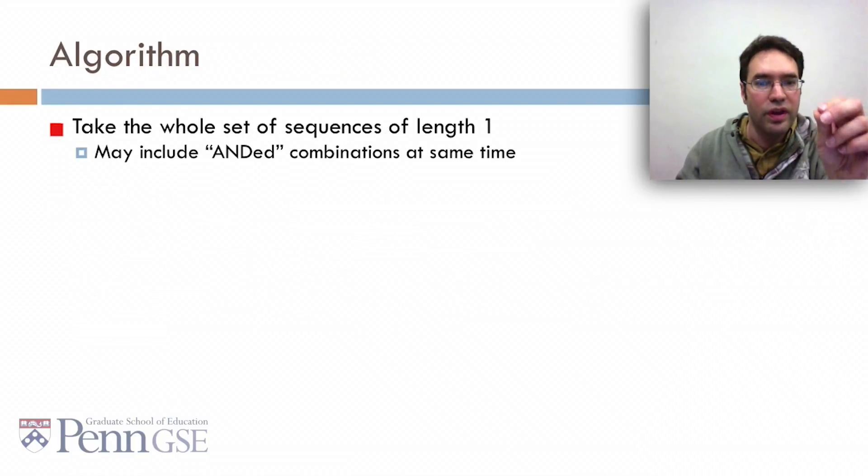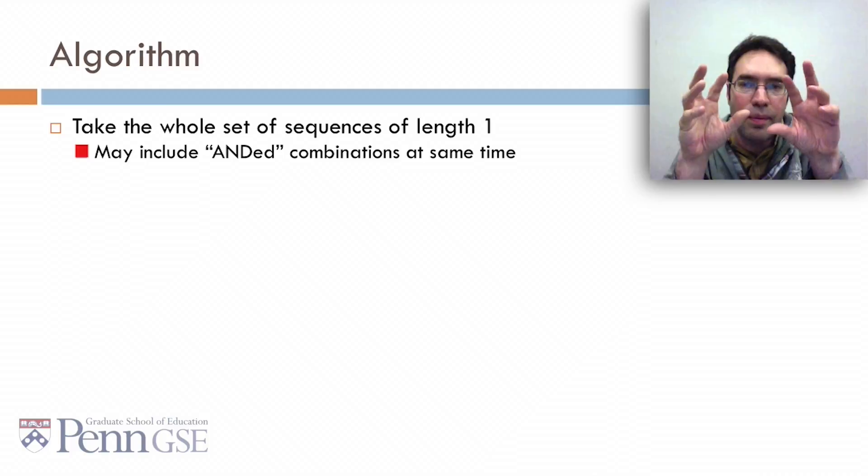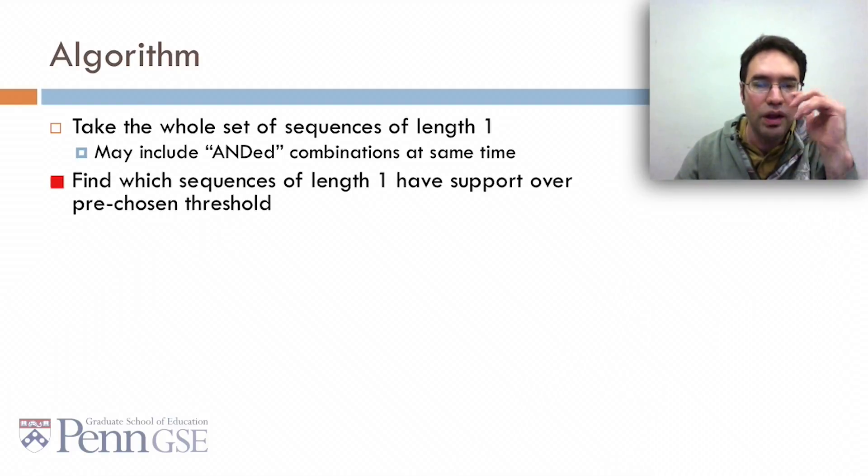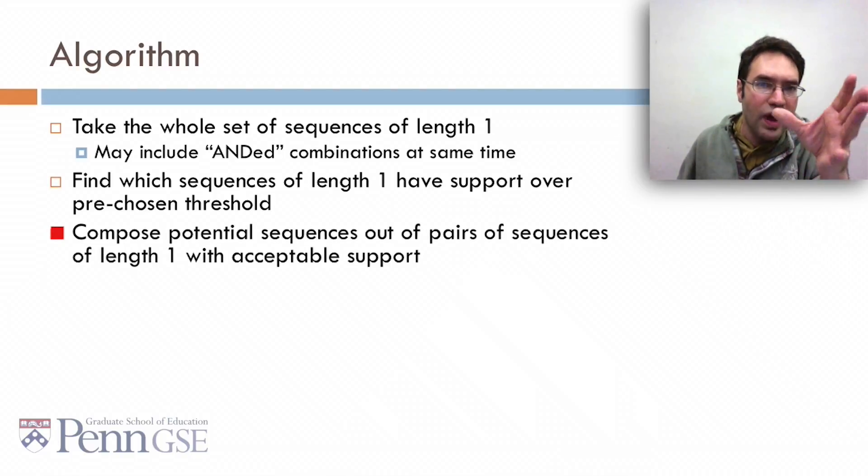We take the whole set of sequences of length one, which may include ANDed combinations occurring at the same time. We find which sequences of length one have support over a pre-chosen threshold.